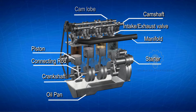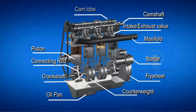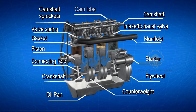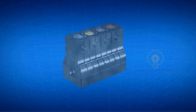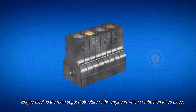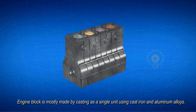Here we will look at the major parts that make up an engine. The engine block is the main support structure of the engine, in which combustion takes place. The engine block is mostly made by casting as a single unit, using cast iron and aluminum alloys.